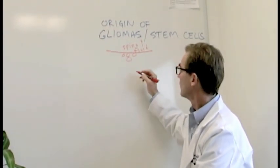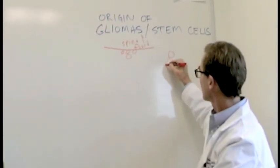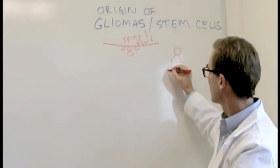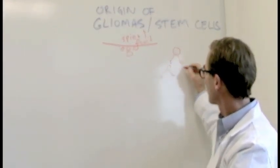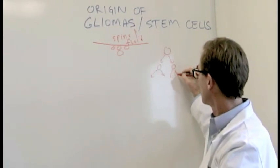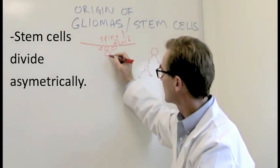What does that mean? Well, if a cell divides symmetrically, it divides like that. And then this cell divides like that, et cetera. Stem cells divide asymmetrically.